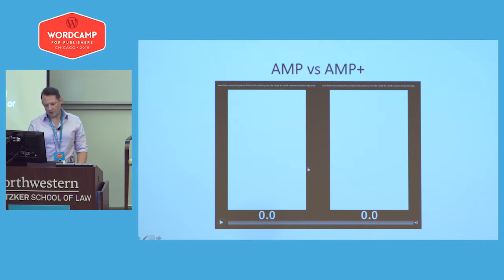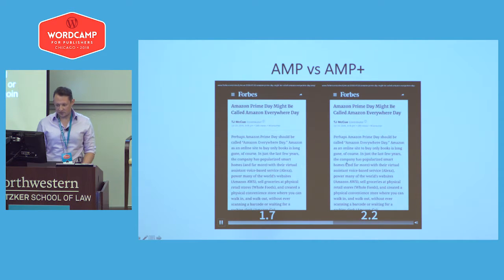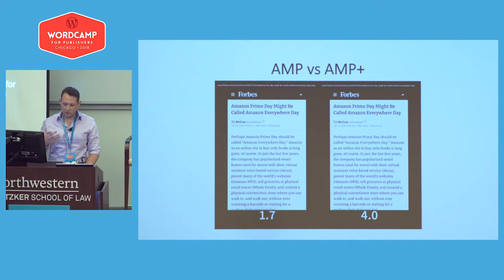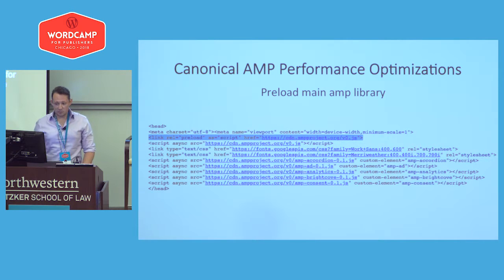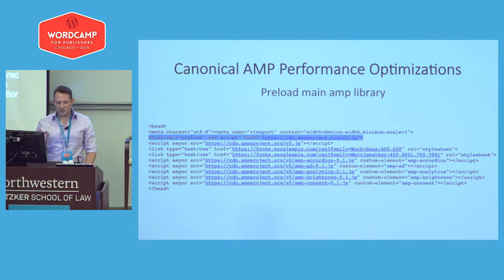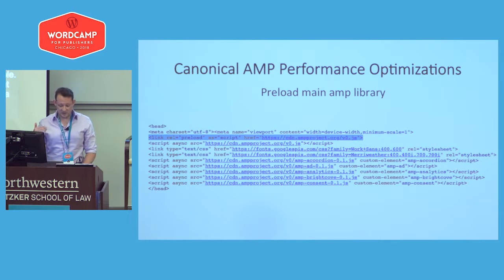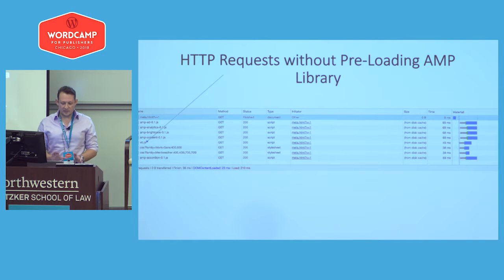Here I'll showcase the difference between an unoptimized canonical AMP on a local domain versus AMP+ with optimizations — at least half a second improvement for start render, because we're not waiting for critical AMP libraries to load. We also implemented another key optimization: preloading and prioritizing critical assets. All you need to do is add one meta tag called preload with a specific asset, and the browser will prioritize it and load it as fast as possible. It's a very easy win with a huge difference on your site.